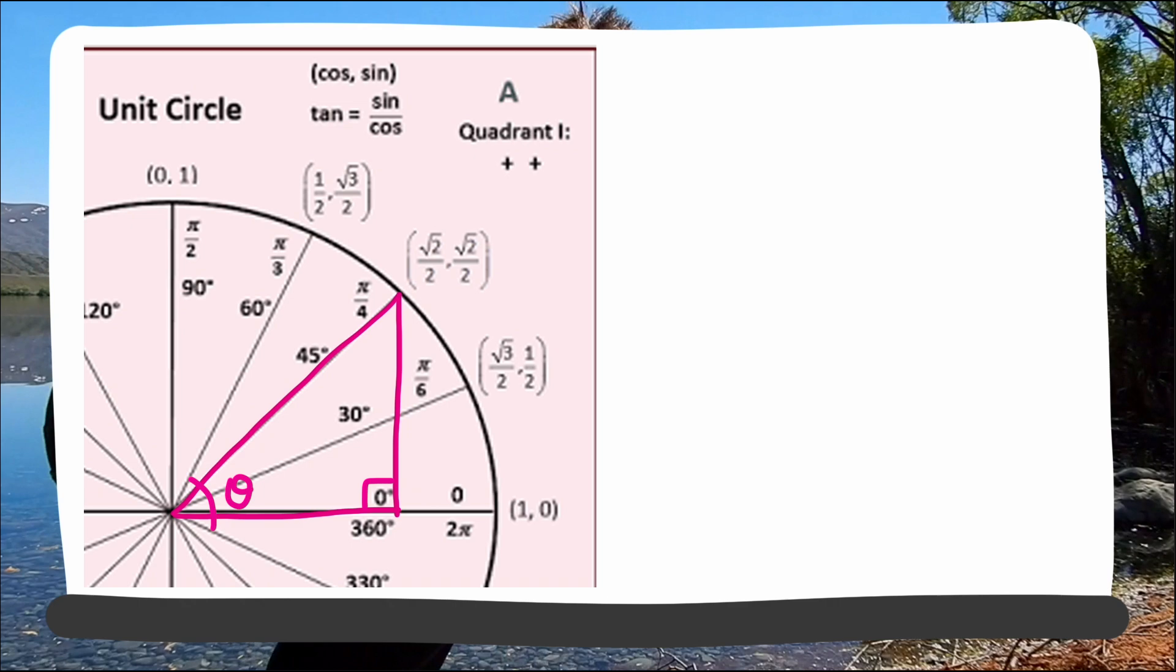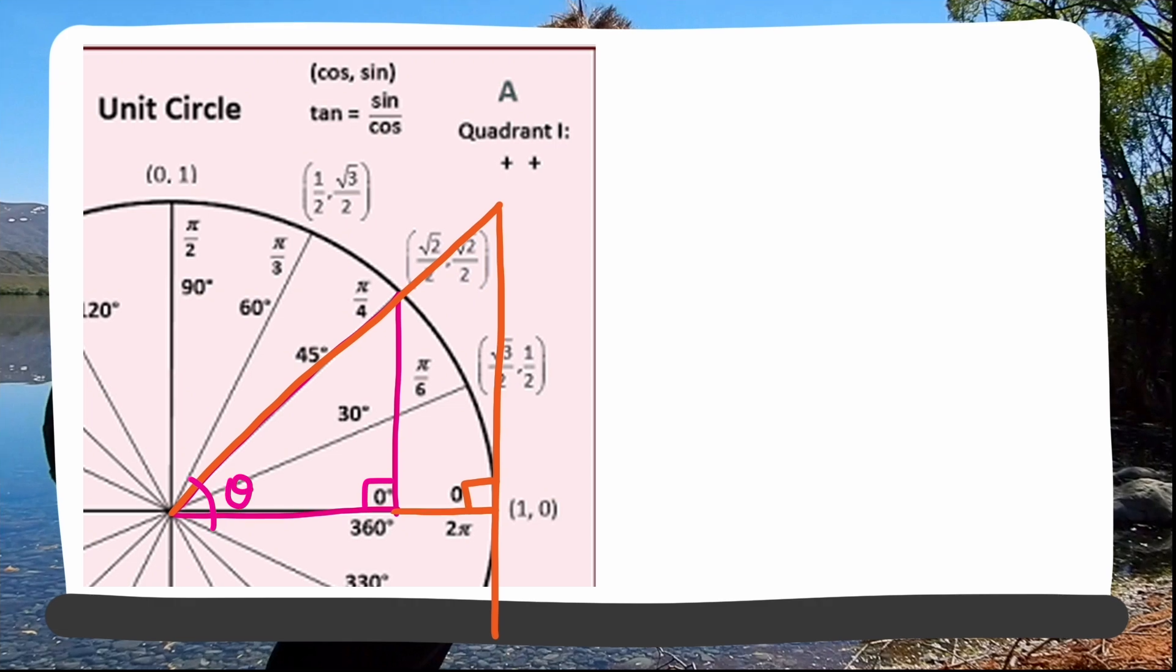If we extend the hypotenuse of this triangle in the unit circle and extend a line up from the point, then we can make another triangle. The ratio of these two sides is this length divided by the radius of the circle, which is a 1.